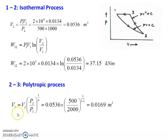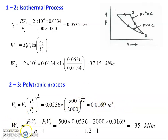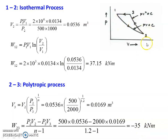For the polytropic process: V3 equal to V2 into (P2 by P3) to the power 1 by N equal to 0.0536 into (500 divided by 2000) to the power 1 by 1.2 equal to 0.0169 m³. Work done W23 equal to (P2V2 minus P3V3) divided by (N minus 1) equal to (500 into 0.0536 minus 2000 into 0.0169) divided by (1.2 minus 1) equal to minus 35 kNm. This is compression, so work is supplied to the gas.